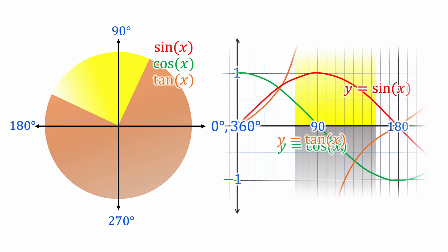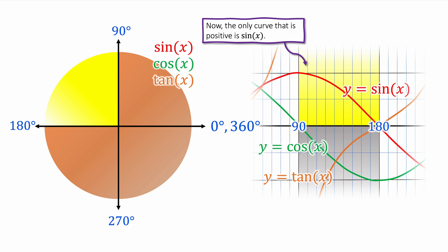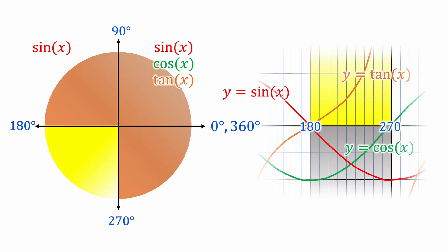Our next quadrant, 90 to 180, only the sin graph is positive here. The cos and tan graphs have gone negative. So we can put sin is positive in this quadrant. Our next quadrant, from 180 to 270, has tan(x) being positive. Cos and sin are negative. So we can label this quadrant with tan(x).